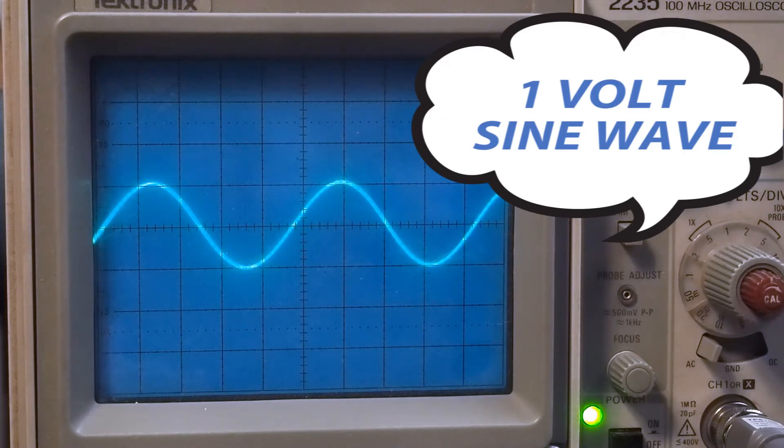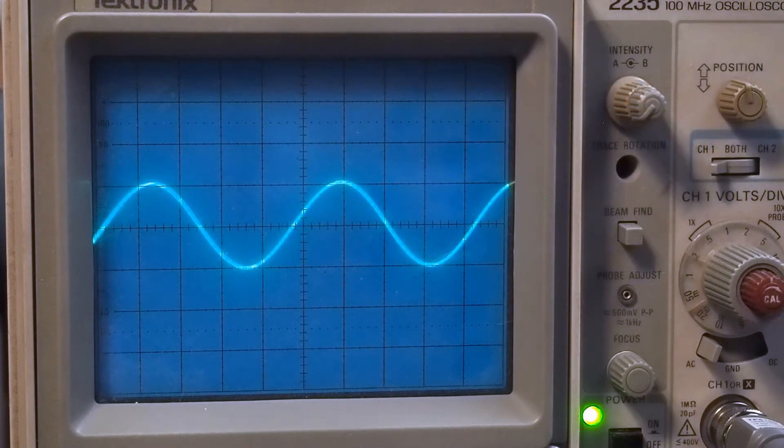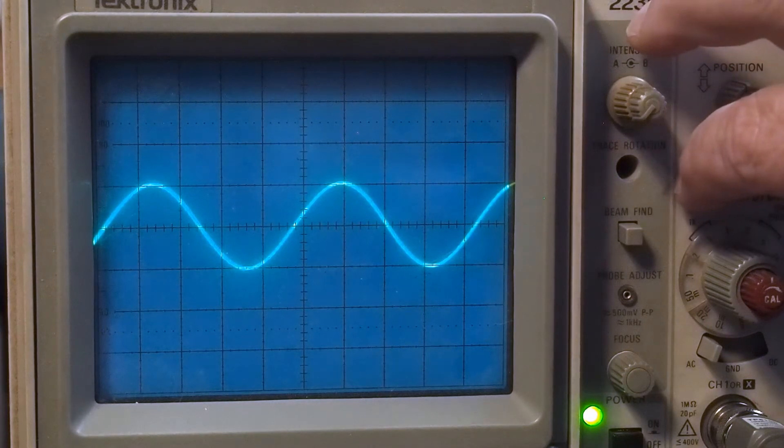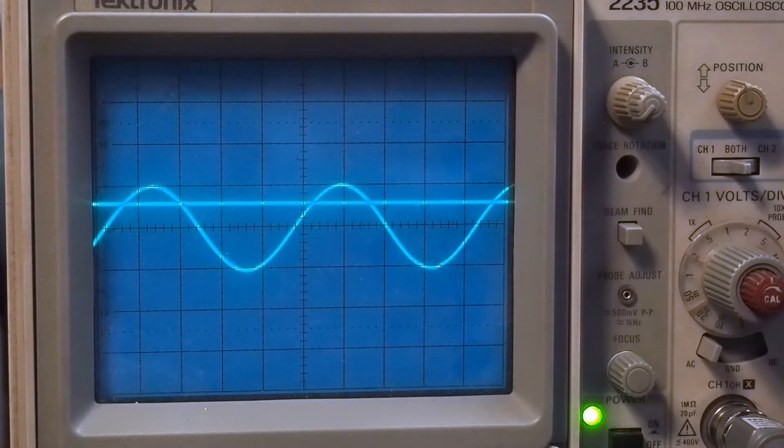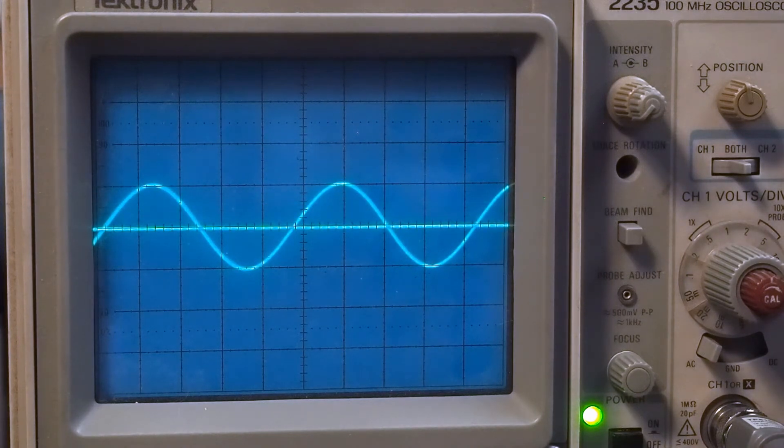So now we power up the amplifier, and like I said, we've got our dummy loads connected to it, and we're connected to the right channel as we're inputting on the right channel. And just let the amp warm up a little bit. This is going to show both channels. So this will be the input and the output.